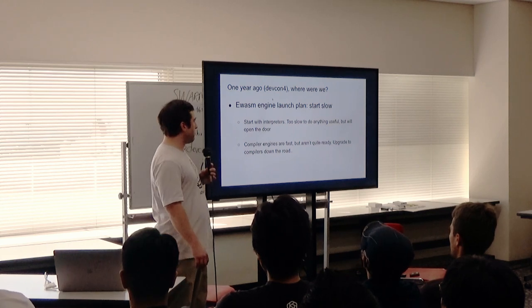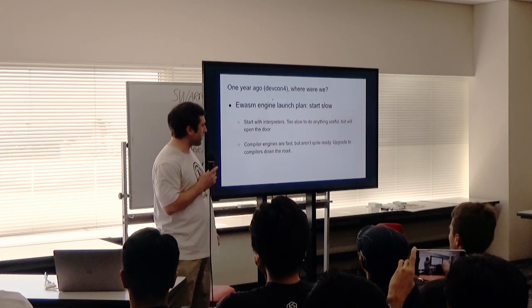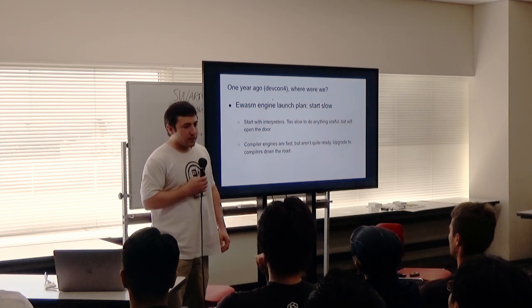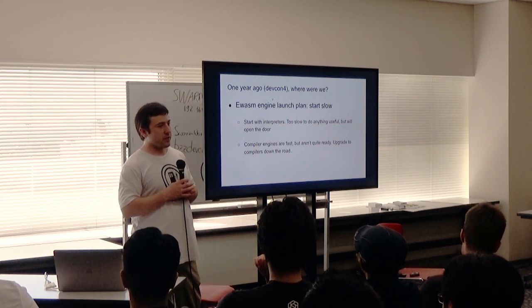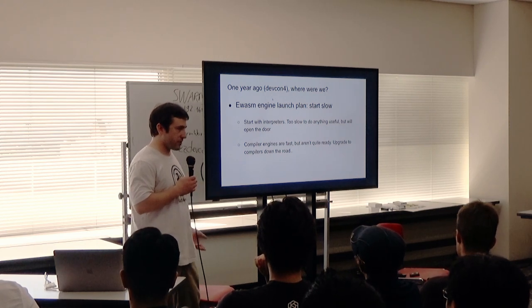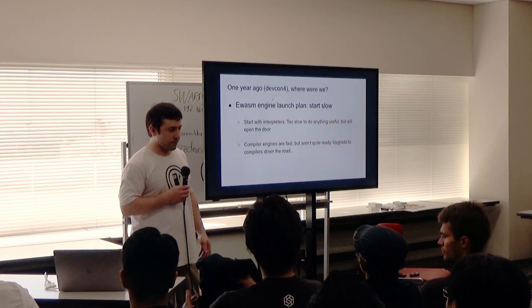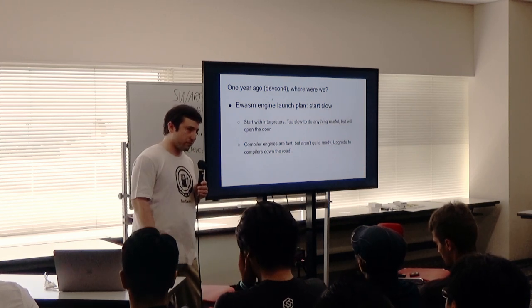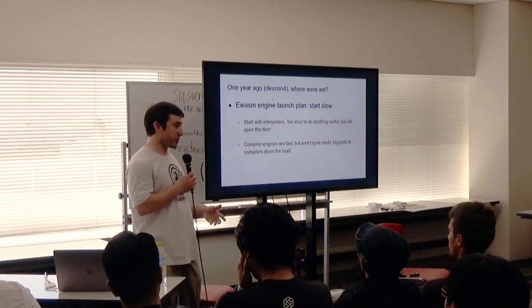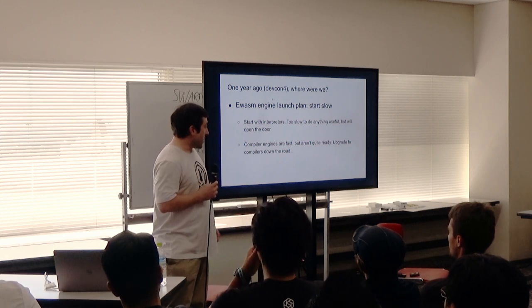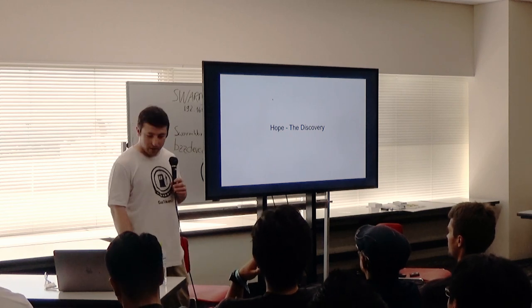In all the 1.x discussions between DevCon last year and the January meeting, we faced this problem: if compiler engines aren't ready and we want to introduce WASM on Ethereum, how do we do that? The idea was: okay, we could start with an interpreter just to get the door open. Even if too slow for the really useful stuff, at least we'd have WASM on Ethereum, and it would incentivize teams to work on compiler engines and bring them to production readiness. Then we noticed something almost by accident.